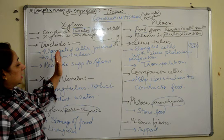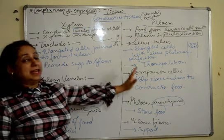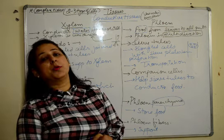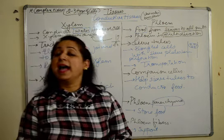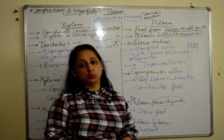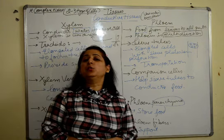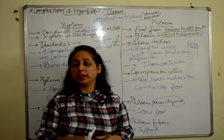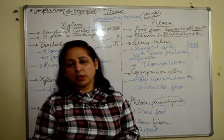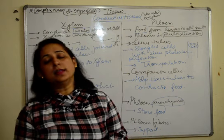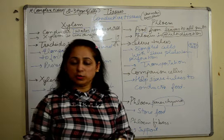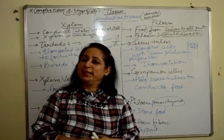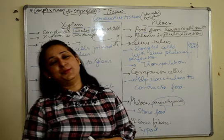So these are the different cells of xylem and phloem. We have discussed the differences between xylem and phloem in detail. In our next video, we will start with animal tissues and do all the types of animal tissues one after the other in an elaborative manner. Keep liking, sharing, and subscribing. Thank you.